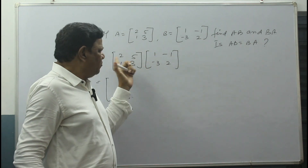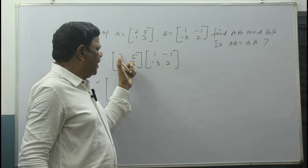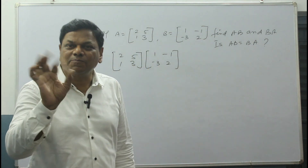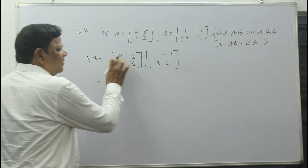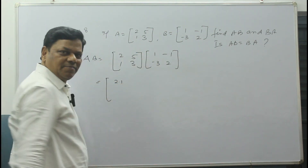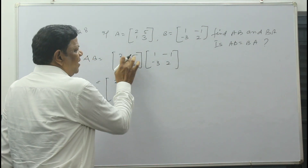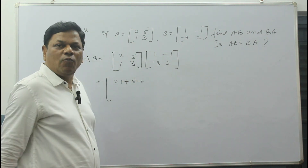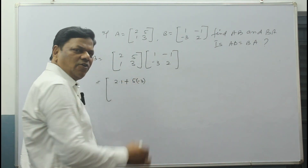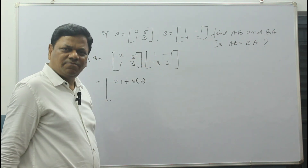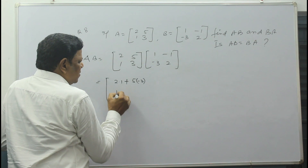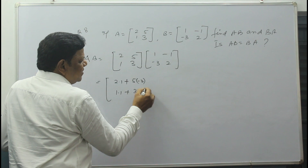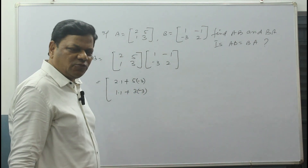Applying the formula — A×X plus B×Y: that is 2×1 plus 5×(-3). Whenever a minus is given, put one bracket. So 2×1 + 5×(-3). Then C×X plus D×Y: 1×1 plus 3×(-3). For the second column: A×M plus B×N gives 2×(-1) plus 5×2. And C×M plus D×N gives 1×(-1) plus 3×2.